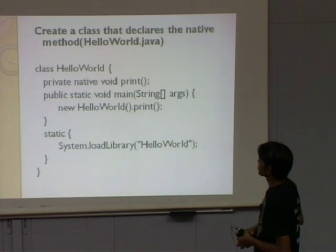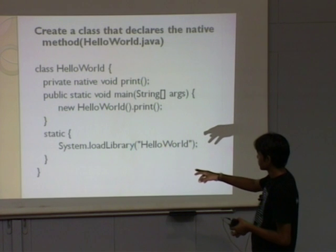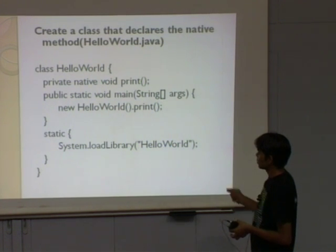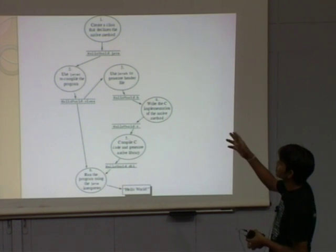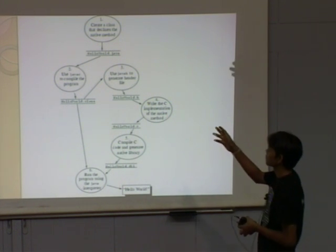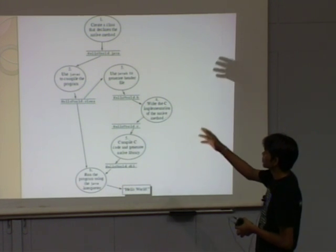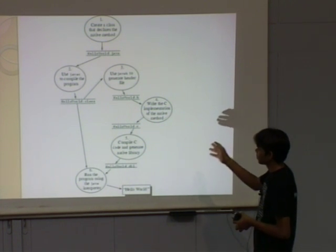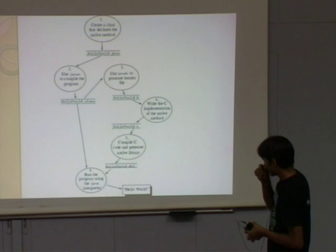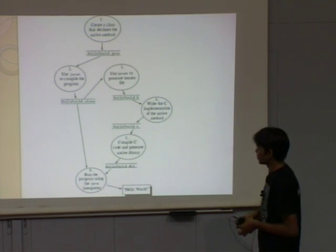When it instantiates HelloWorld (new HelloWorld), the program loads the HelloWorld library. The flow is: create a class with a native method (HelloWorld.java), compile it, generate the header file, implement the print method in C, compile the C to generate HelloWorld.dll or .so, then run using the Java interpreter.